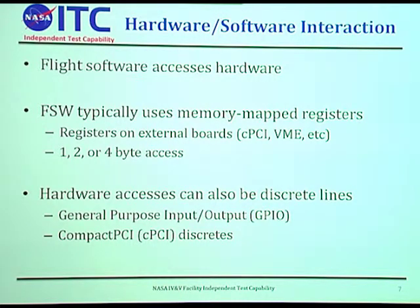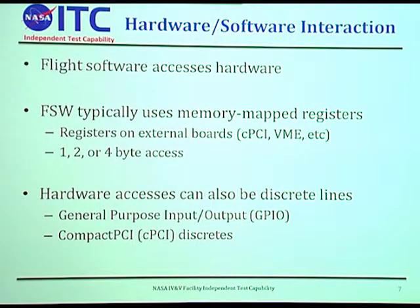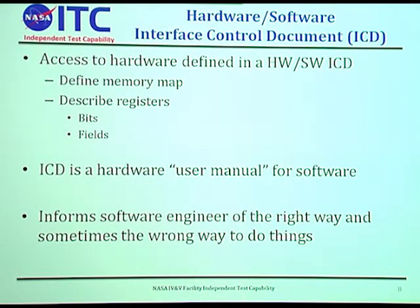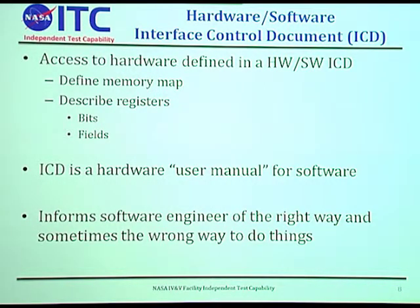Flight software accesses hardware, typically using memory-mapped registers. Registers could be mapped onto external boards like compact PCI or VME, and typically accesses are one, two, or four bytes in size. Hardware accesses can also be discrete lines — for example, compact PCI discrete or GPIO lines on your processor. All this is documented in the ICD — the Interface Control Document, or Hardware Software Interface Control Document. The ICD defines the memory map with offsets of registers, describes what the bits and fields do, and defines the behaviors of those things. We like to think of it as a hardware user manual for software.